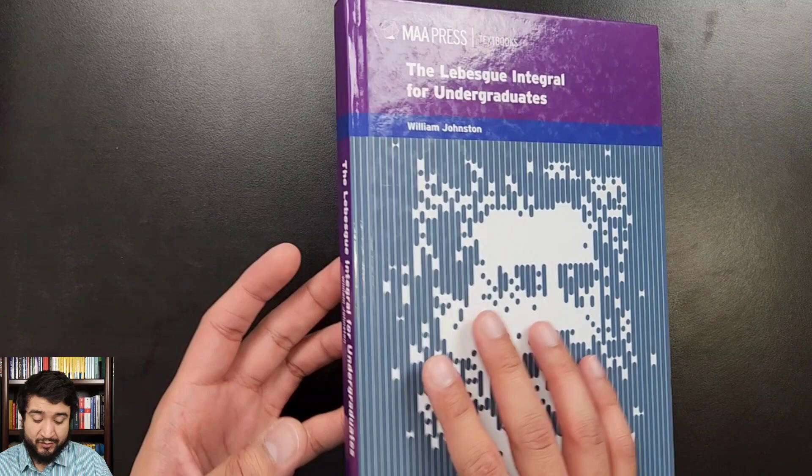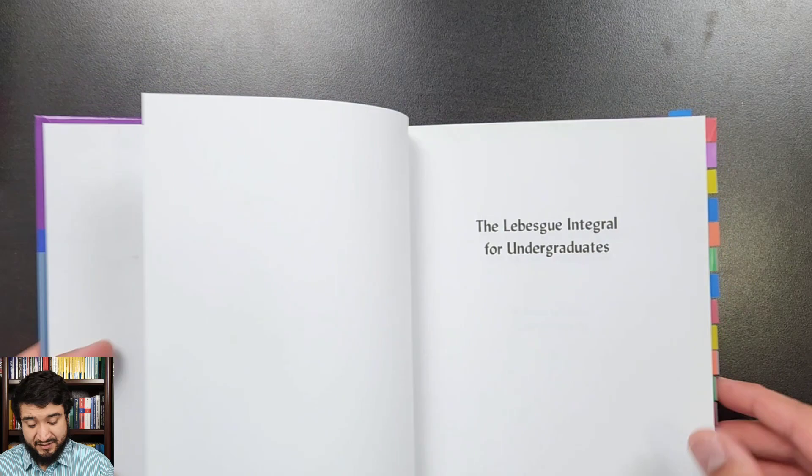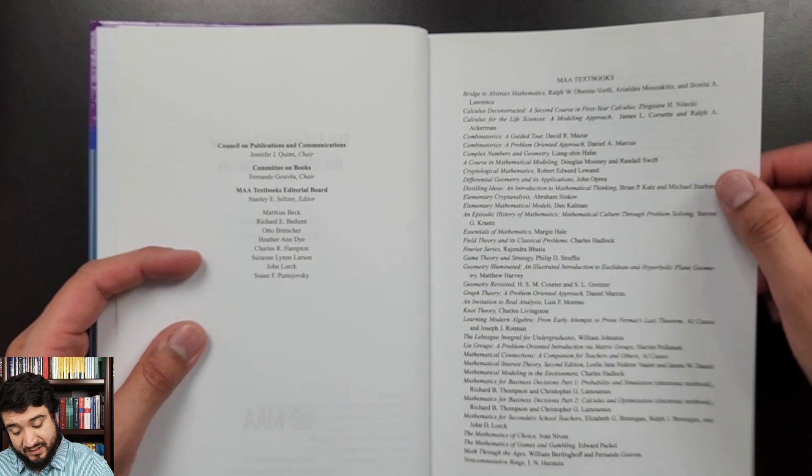Today we've got The Lebesgue Integral for Undergraduates by William Johnston. This is a very unique book. I have never seen another book that does anything like this.